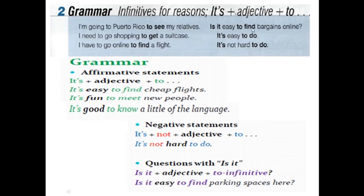The other structure is: It's + adjective + to + infinitive. For example: 'It's easy to find bargains online' or 'Is it easy to find bargains online?' So the pattern is: It + is + adjective (easy) + to + base verb. It's easy to do. It's not hard to do. الفعل بعد 'to' دائماً يكون فعلاً مجرداً.